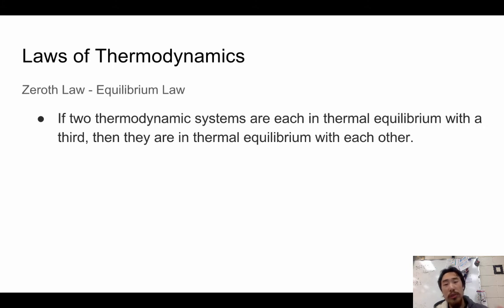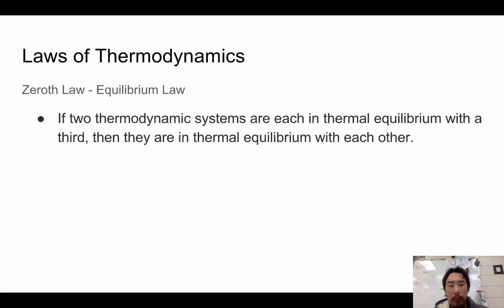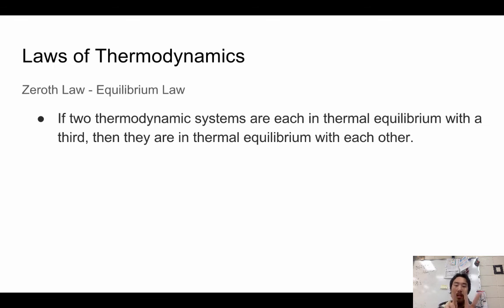Now let's go over the laws of thermodynamics. The zeroth law — which was actually the last one discovered — states that if two thermodynamic systems are each in thermal equilibrium with a third, then all three are at the same temperature. So if you have three objects and two are in equilibrium, then when all three are connected, they are all at the same temperature.